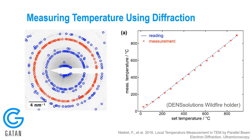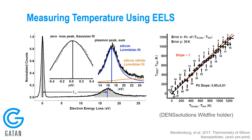They found that the temperature measured using diffraction matched the temperature given by the DENS Solutions holder to within 5%, as DENS Solutions claims. The final example of measuring temperature inside the microscope returns to EELS. This group at USC, led by Matt Necklenberg, is using the plasmon peak energy to measure the temperature inside the microscope — measuring the plasmon peak by fitting a function to the data. They're able to measure the temperature fairly precisely, and again find that the difference between the measured temperature and the nominal temperature given by the DENS Solutions holder is within 5%.